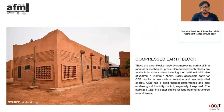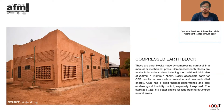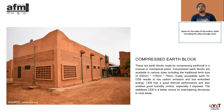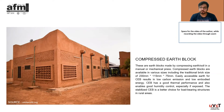Compressed Earth Block (CEB). These earth blocks are made by compressing earth or soil into standard brick sizes of 230 mm x 115 mm x 75 mm. Easily accessible on-site earth for CEB results in low carbon emission and low embodied energy. CEB has good thermal performance and also enables good humidity control, especially if exposed. The stabilized CEB is a better choice for load-bearing structures in rural areas.